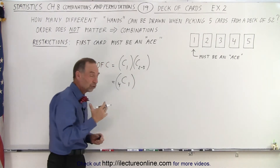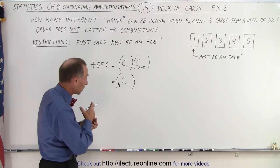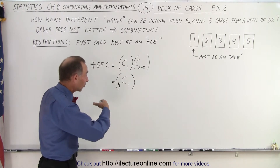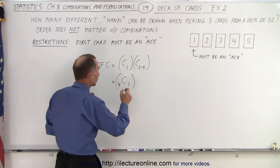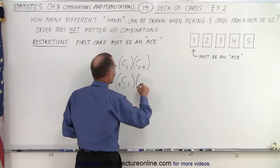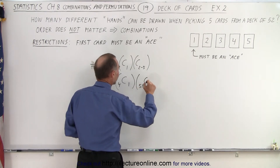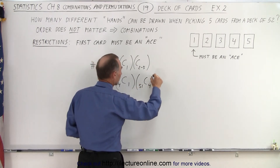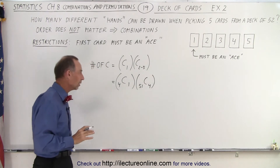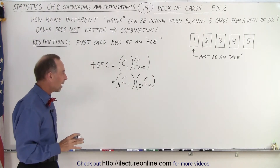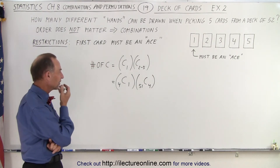Since there are no restrictions on the remainder of the cards, the remaining three aces can still be picked for the next four cards. That means there are now 51 cards left and we're picking four cards out of those 51. That's how we're going to figure this out.